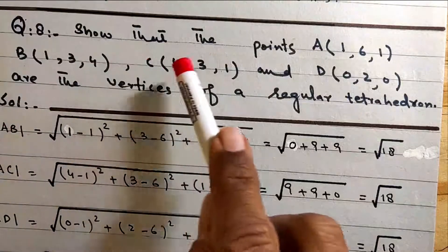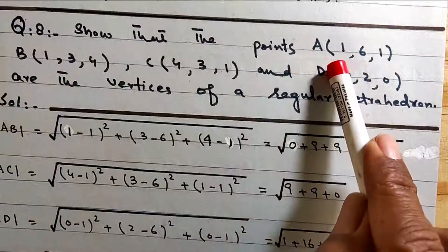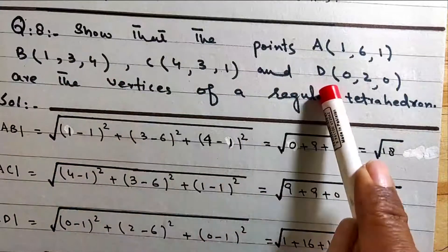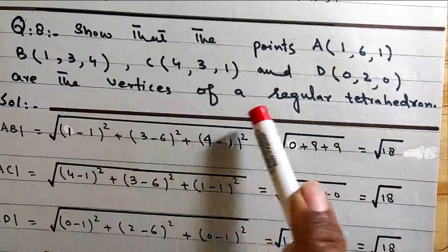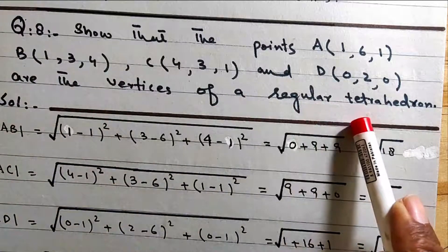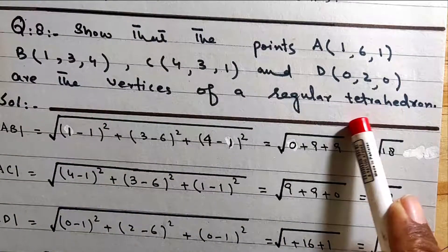The points A, B, C, and D are the vertices of the regular tetrahedron.